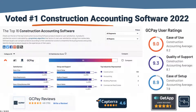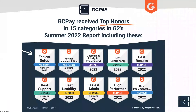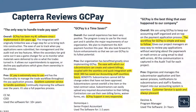GCPay comes with an internal routing and approval process which you can customize for each job. GCPay will also streamline the entire compliance process — you can automatically notify subs when their compliance items are about to expire, and you can even stop subs from submitting a billing if they haven't updated their insurance. GCPay was recently voted number one construction accounting software on G2's review site for Q1 and again for Q2. We received an overall satisfaction score of 92%, with 9.0 for ease of use, 9.3 for quality of support, and 8.9 for ease of setup. GCPay received top honors in 15 categories including easiest setup, fastest implementation, and best support.